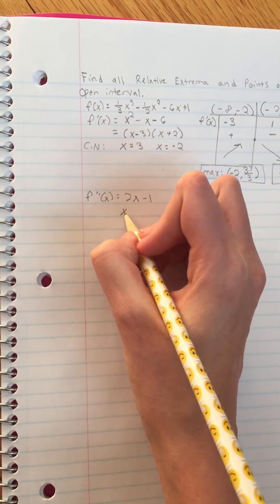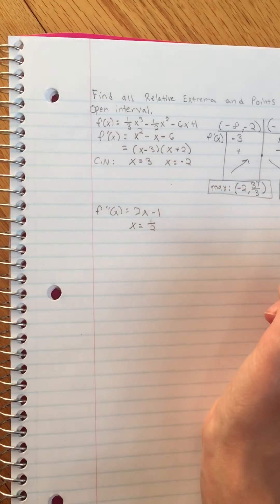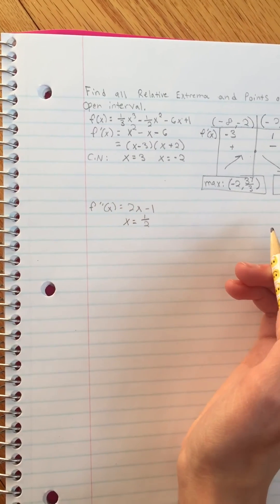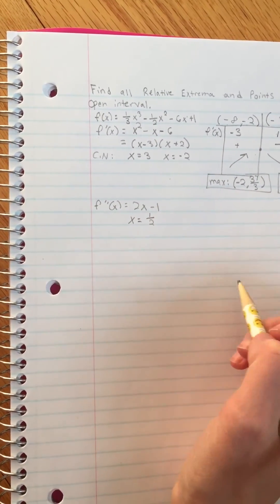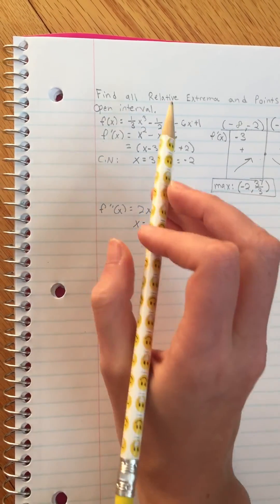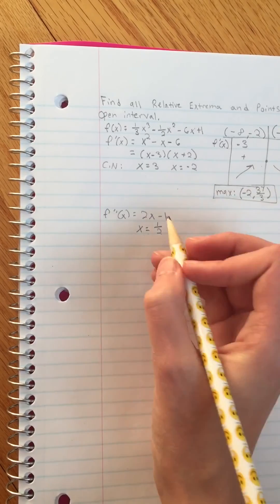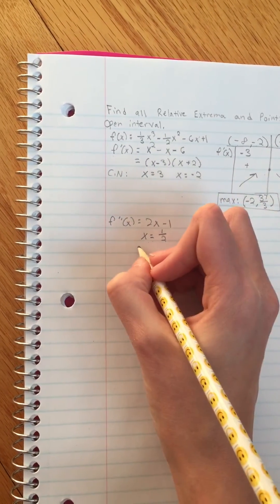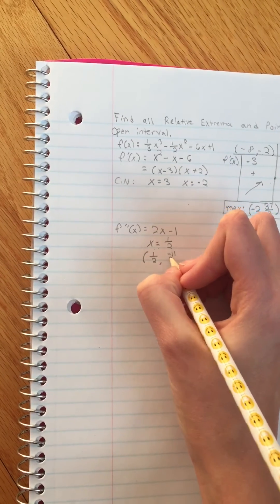Just set it equal to 0. You're going to get x equals 1/2, and then this is nice because we only have one x value, so we don't have to make another chart. Find concave up, concave down, all that. All you have to do is plug this x value back into the original, just like we did over here, to find the y value. And that is going to be negative 11 over 6.